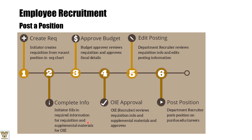Step three is getting things approved — the budget approval determines the cost to the company for new appointees. The budget reviewer approves fiscal details, and the officer in charge reviews the requisition and supplementary information. The departmental recruiter reviews the position information and editing of the posting, and finally the position is posted.